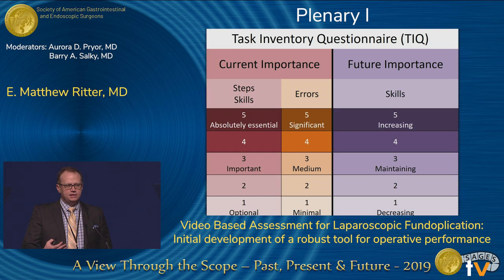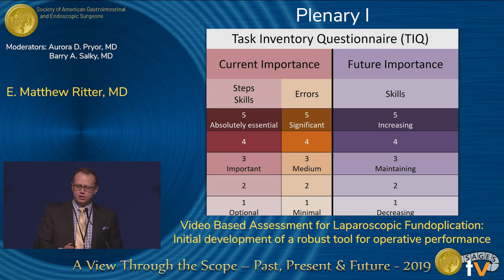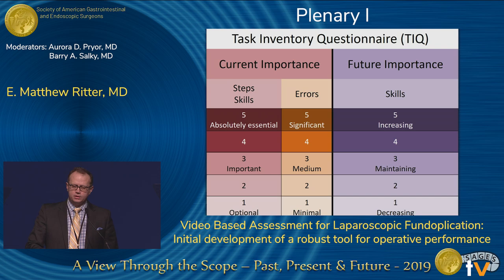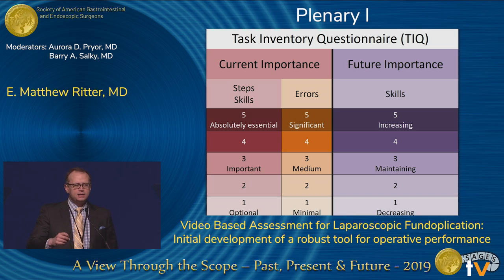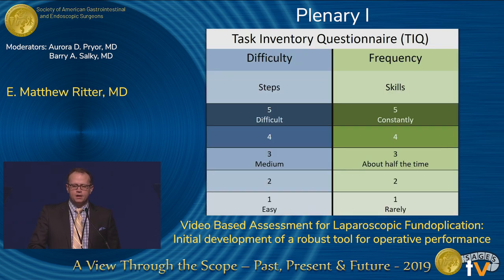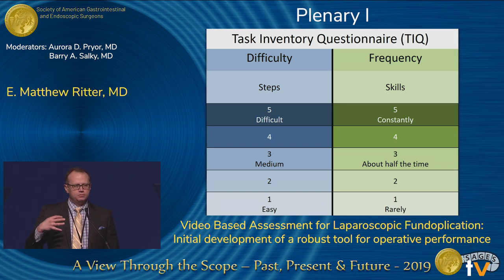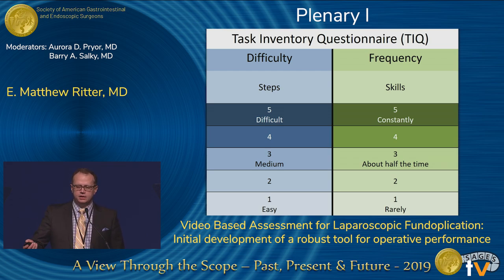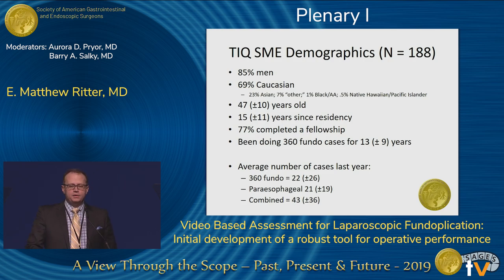Once you have this list, it's important to provide weighting to decide which things need to be included in the assessment. We measured current importance and future importance of these areas — particularly of the skills — to make sure we weren't going to measure something that would essentially go away in the short term. Steps anchored toward 'absolutely essential' would have direct and significant impact on patient outcome. We also looked at difficulty — how many alternative strategies you need to consistently achieve a good outcome on that step — and frequency.